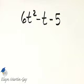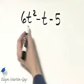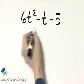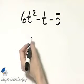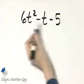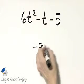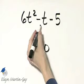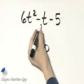Let's now factor by grouping, or the AC method. No common factor. I'm looking for two numbers whose product is 6 times negative 5, whose product is negative 30, and whose sum is negative 1, this coefficient.